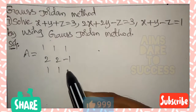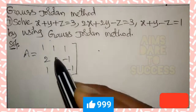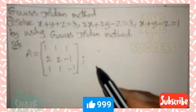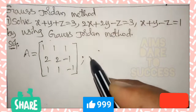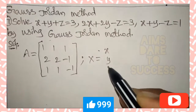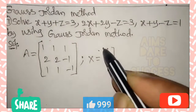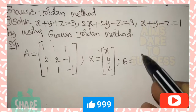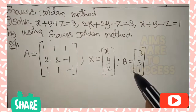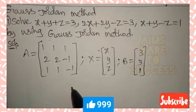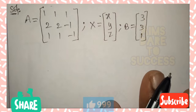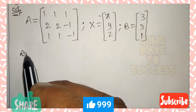The second row of A is 2, 2, -1 and the third row is 1, 1, -1. Matrix X (capital X) contains the variables x, y, z arranged as a column vector. Matrix B contains the right-hand side constants from the three equations: 3, 3, 1 arranged as a column vector.